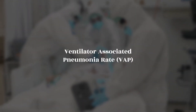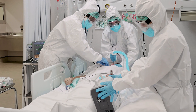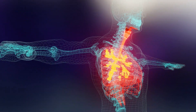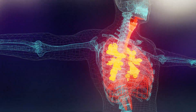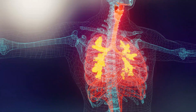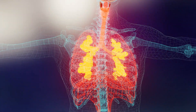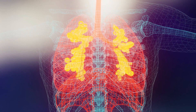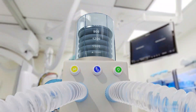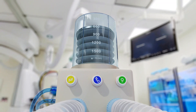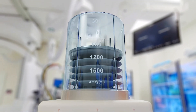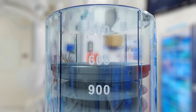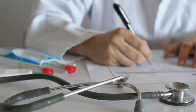Ventilator Associated Pneumonia Rate (VAP) — Indicator Type: Outcome Related. Definition: Ventilator Associated Pneumonia (VAP) is a lung infection that develops in a patient who has been on a ventilator for more than 48 hours. VAP is the second most common infection in the ICU and the most common infection in mechanically ventilated patients. It is also the second most common hospital-acquired infection among pediatric and neonatal ICU patients.